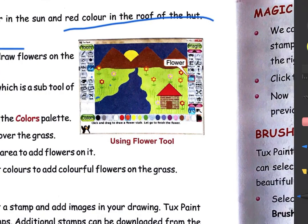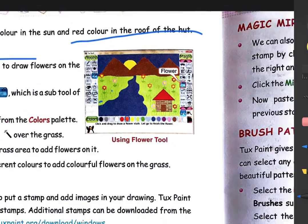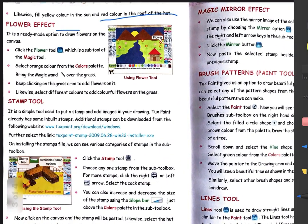Look at this image — many beautiful flowers have been drawn here, just because of this effect. So now, how to use it: first of all we have to click on the Flower Tool, which you will find in the magic tool sub-toolbox. From there, select the Flower Tool, then select orange color from the color palette, or whatever your favorite color is.